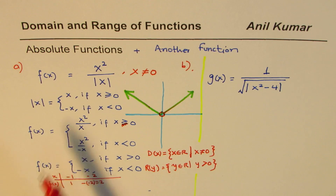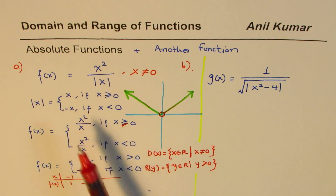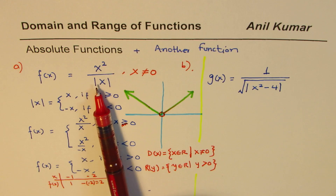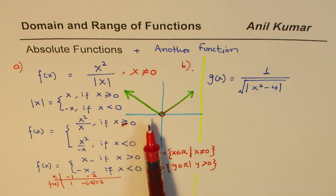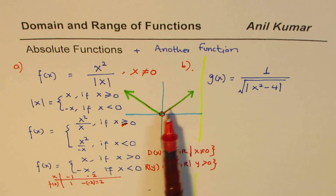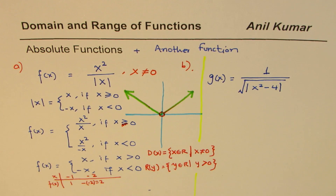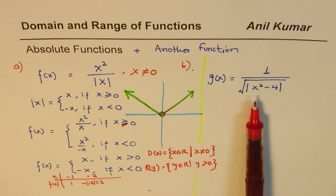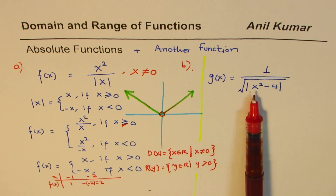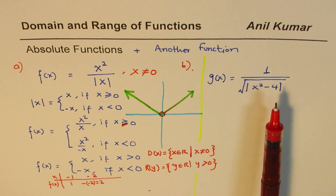So when we combine an absolute function with other functions, things really change. x squared divided by absolute x is essentially the absolute value function, just not defined at the origin, but otherwise the same.